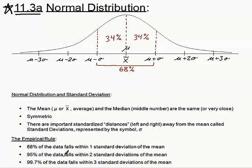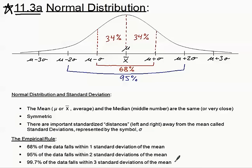Ninety-five percent of the data falls within two standard deviations of the mean — that's the middle 95%. To get from 68% to 95%, that's an extra 27%, and that 27% has to be split evenly between the two new regions. Half of 27% is 13.5%, so there's 13.5% of data in the left region between one and two standard deviations, and 13.5% in the upper region.